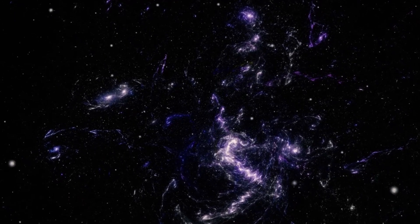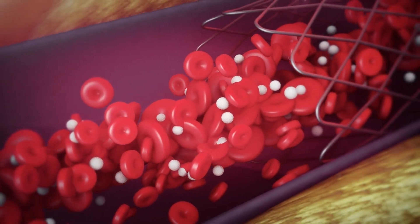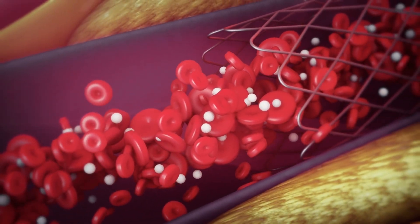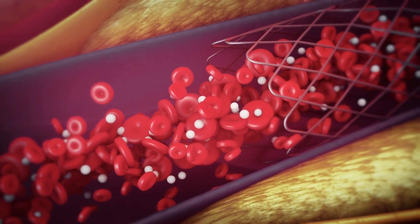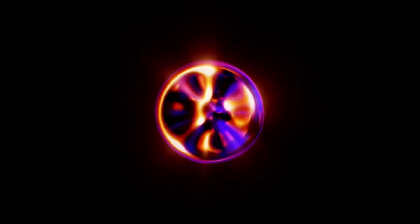The iron in our blood, the calcium in our bones, and every element heavier than hydrogen owe their existence to nuclear processes within stars. Through the intense heat and pressure of stellar cores, atoms fused to form heavier elements, which were later released during violent stellar explosions known as supernovae.